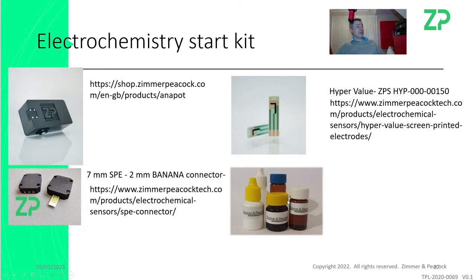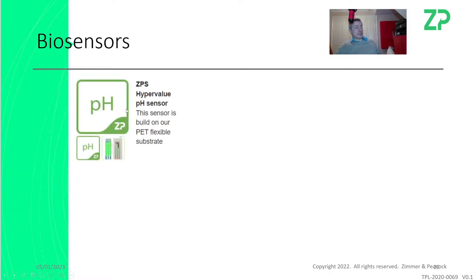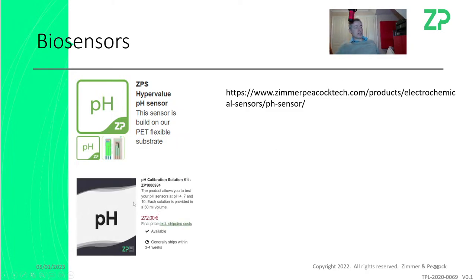Here are some screen-printed electrodes — the link will be underneath. And I'd recommend a test solution of ferricyanide so you can do voltammetry, cyclic voltammetry, and practice all the electrochemical techniques. So: a potentiostat, a connector, screen-printed electrodes, and a solution for testing. If you want to get more into biosensors, the pH sensor is really the place to start — it's our most robust and lowest-cost sensor.